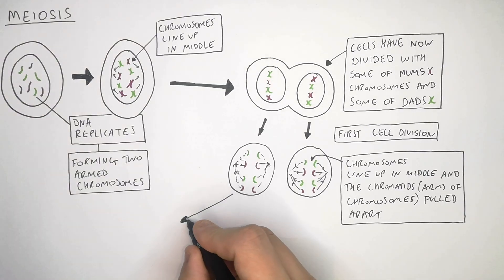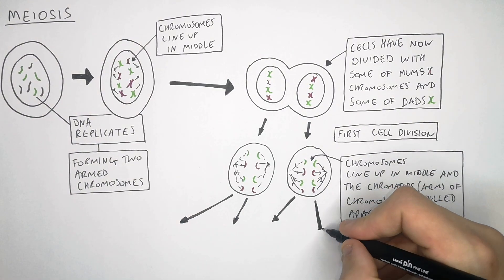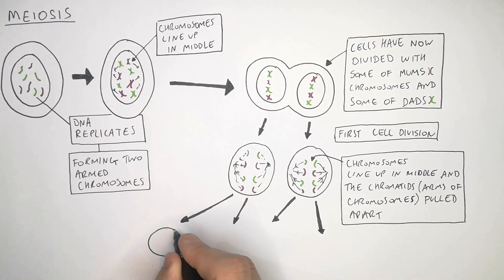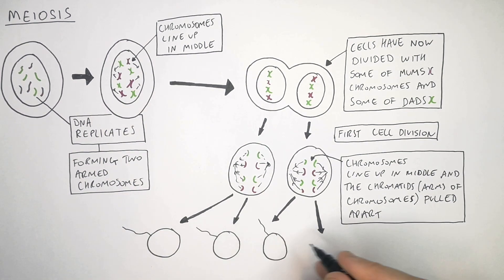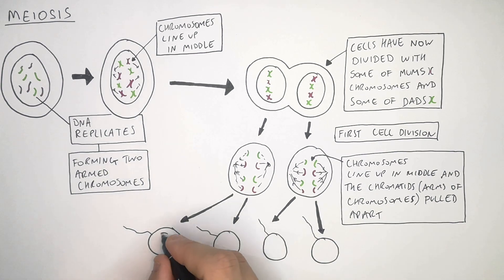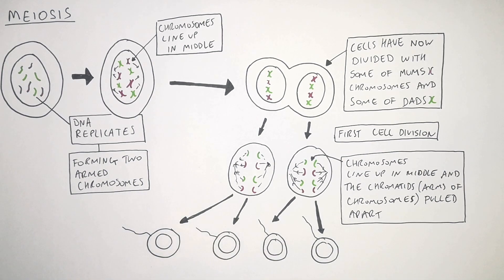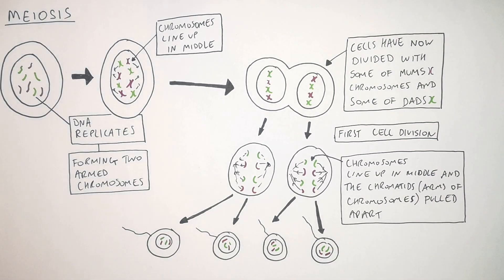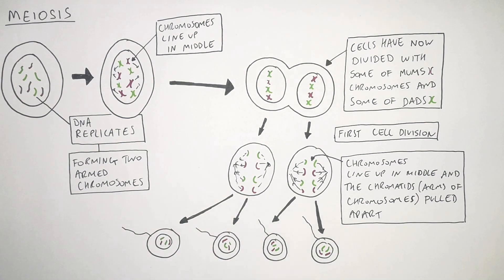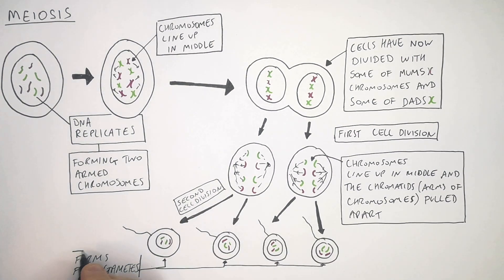These two cells then divide to form four cells, and the cells that are formed are known as gametes or sex cells. In this case, this is happening in the man because four sperm cells are formed, each with half the number of chromosomes as the previous cell. This is the second cell division of meiosis, where the gametes are formed.